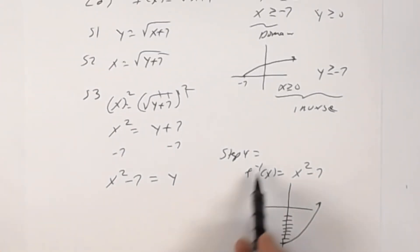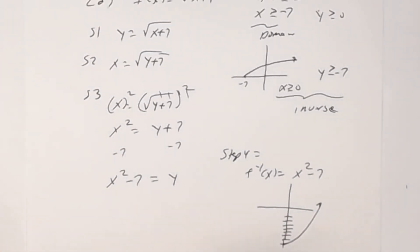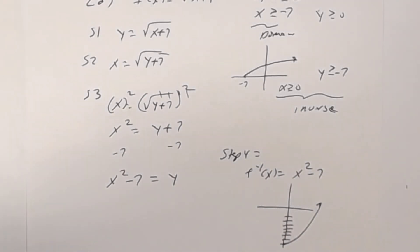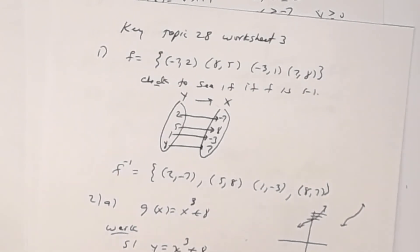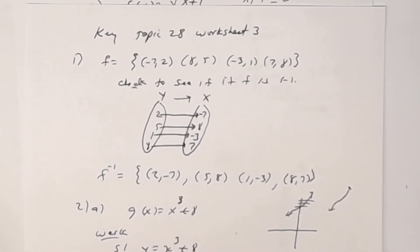Algebraically, all you do is replace f(x) with y, interchange the variables — which means the domain becomes the range and the range becomes the domain of the inverse — then solve for y and replace y with f⁻¹. And that's it. That is the key to Topic 28, Worksheet 3.